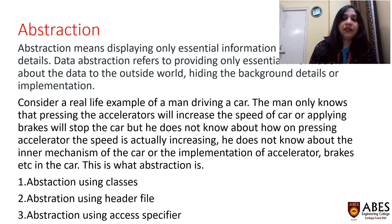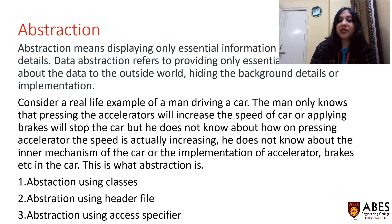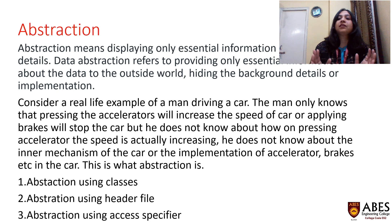Abstraction is another feature of object-oriented programming. Abstraction means displaying only the essential information while hiding complexity from the end user. Consider the real-life example of a man driving a car — he only knows that pressing the accelerator increases speed and applying brakes stops the car, but he doesn't know about the inner mechanism or implementation of the accelerator and brakes. This is abstraction. Abstraction is implemented using classes, header files, and access specifiers — it is basically hiding the complexity of the program.